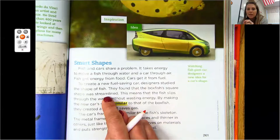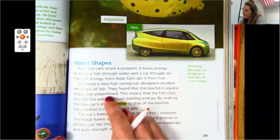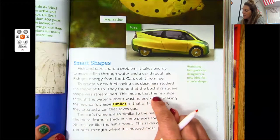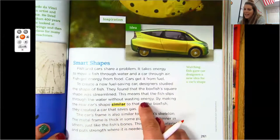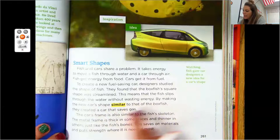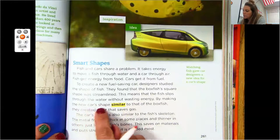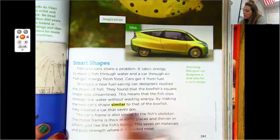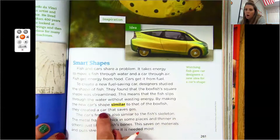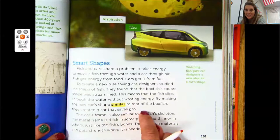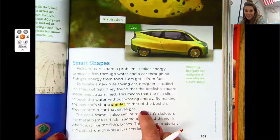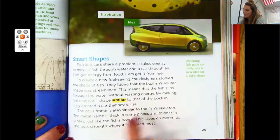Context clues may help us. This means that the fish slips through the water without wasting energy. By making the new car shape similar to that of the box fish, they created a car that what? Saves gas. Is that our effect? I think so. Let's keep reading.